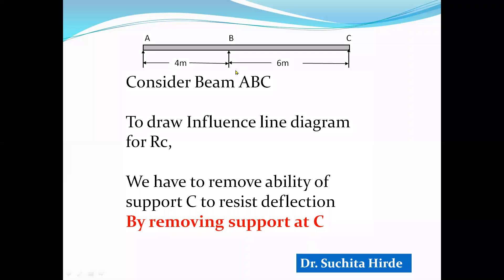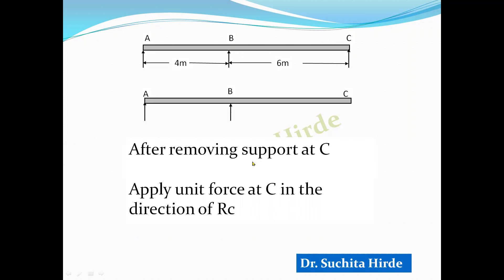For the given beam, to draw the influence line diagram for RC, we remove the ability of support C to resist deflection by removing the support at C. After removing the support, the beam becomes simply supported at A and B with an overhang BC, making C a free end.